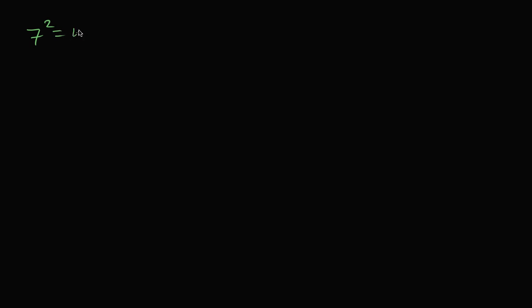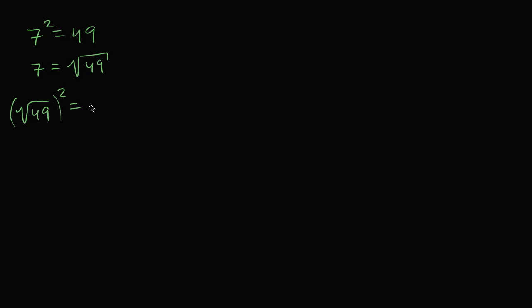We already know a little bit about square roots. For example, if 7 squared is equal to 49, that's equivalent to saying that 7 is equal to the square root of 49. The square root essentially unwinds taking the square of something. The square root of 49 is whatever number times itself equals 49 — if I square it, I get 49. And that's going to be true for any number, not just 49.